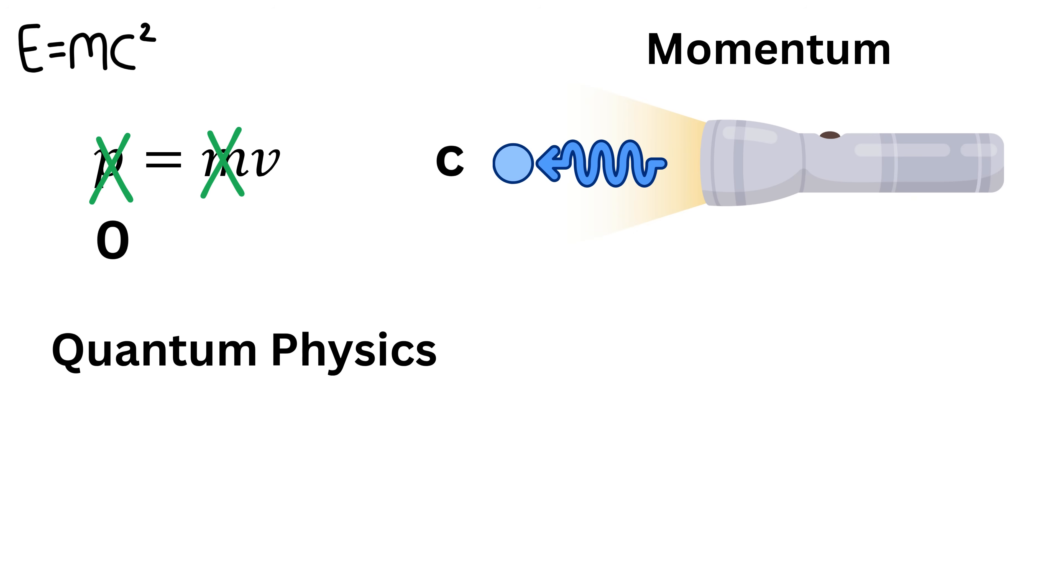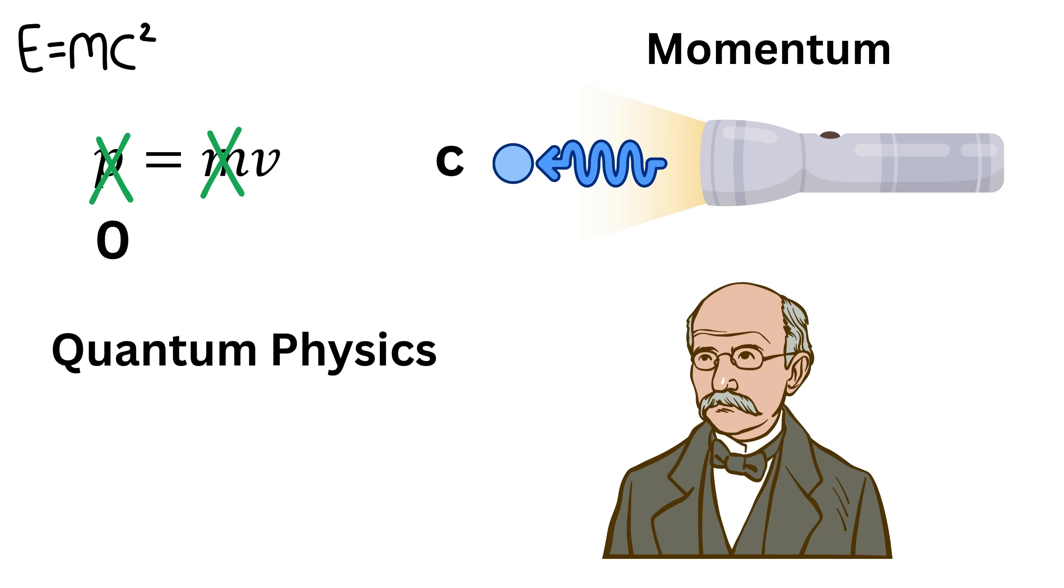The answer comes from quantum physics. In the year 1900, Max Planck discovered that the energy of a photon depends entirely on its frequency, or how fast the wave is oscillating.